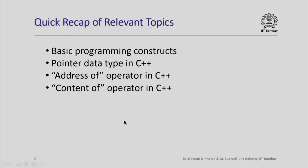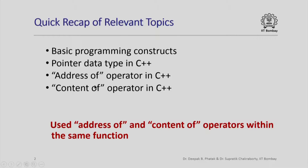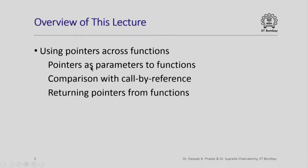Hello and welcome back. In this lecture we are going to see the use of pointers in function calls in C++ programs. Here is a quick recap of some of the relevant topics we have already studied. We have looked at basic programming constructs in C++, the pointer data type, the address-of operator, and the content-of operator. However, we have basically used these operators within the same function in all the examples we have seen so far. In this lecture we are going to use these operators across functions — passing pointers as parameters, comparing this with call by reference, and seeing what happens when functions return pointers.